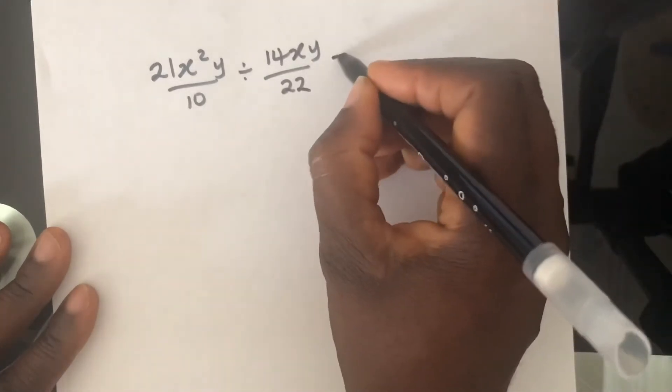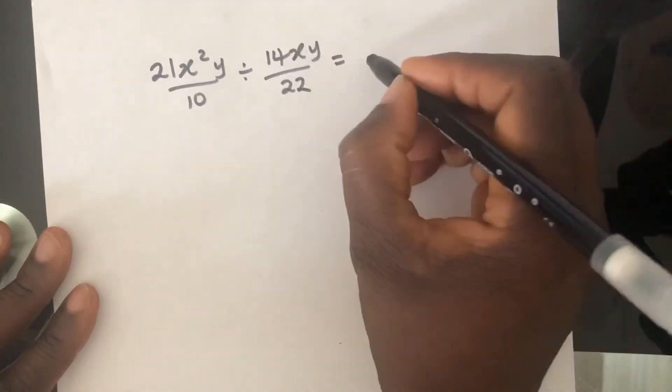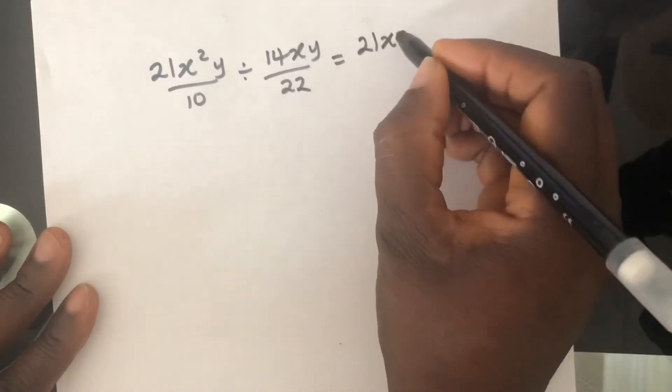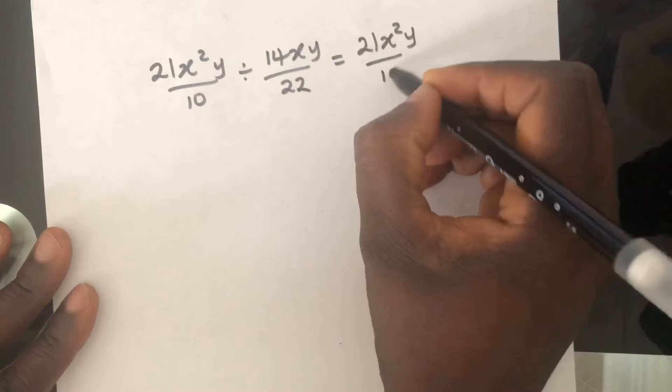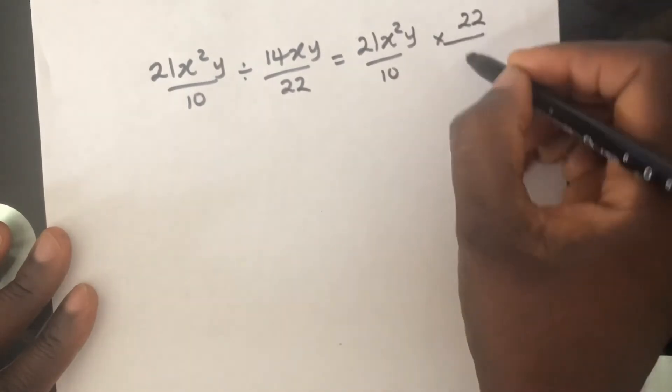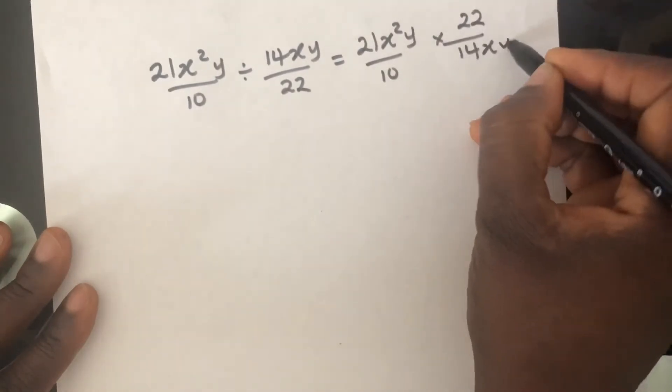Okay. If we leave the first fraction as it is and take the reciprocal of the second fraction, X squared Y over 10 times 22 over 14XY.